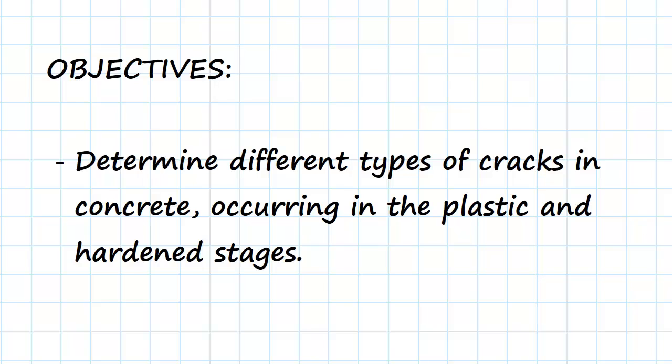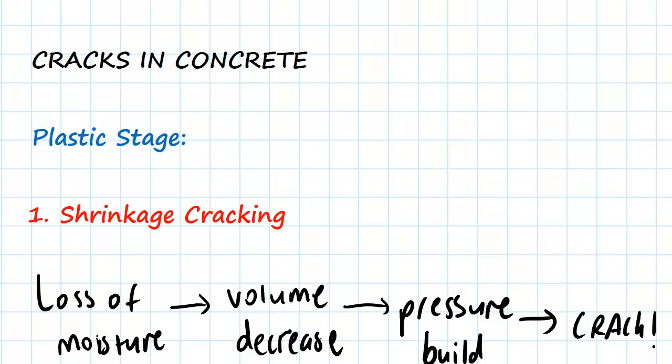Hi everyone, the objective of this video is to determine the different types of cracks in concrete. These are going to be divided between occurring in the plastic and in the hardened stages. So let's begin with the forms of cracking that can happen in the plastic stage. This is before the concrete has begun to settle or harden.